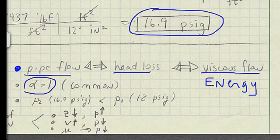When we use the energy equation, it's very common to assume that the kinetic energy correction factor, alpha, is 1. And you'll notice that the pressure at section 2 came out to be 16.9 PSI g, and it's slightly less than 18 PSI, which was the inlet pressure.